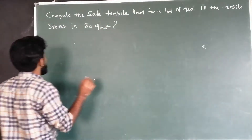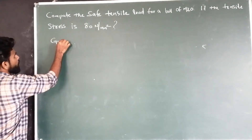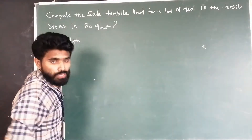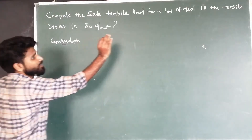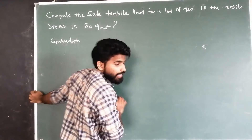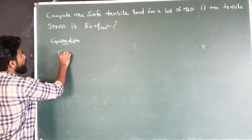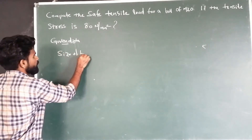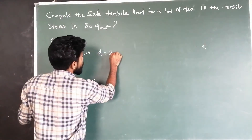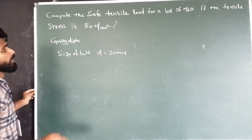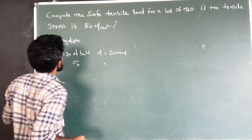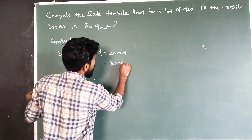As usual, we are going to discuss the given data. The bolt of M20 — the size of the bolt is M20. The nominal diameter is D, so D is equal to 20 mm. The tensile stress is sigma T, and sigma T is equal to 80 N/mm².